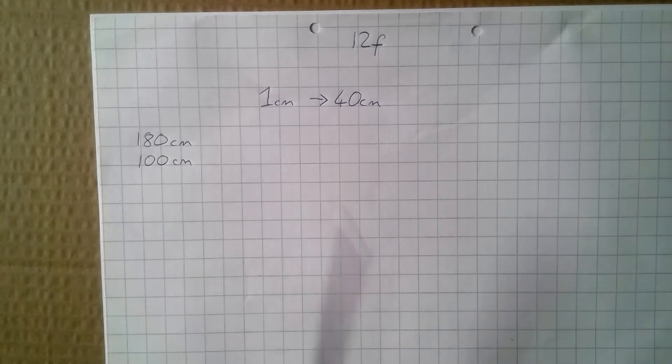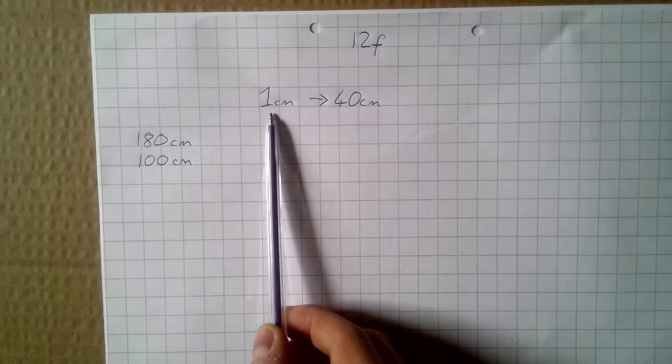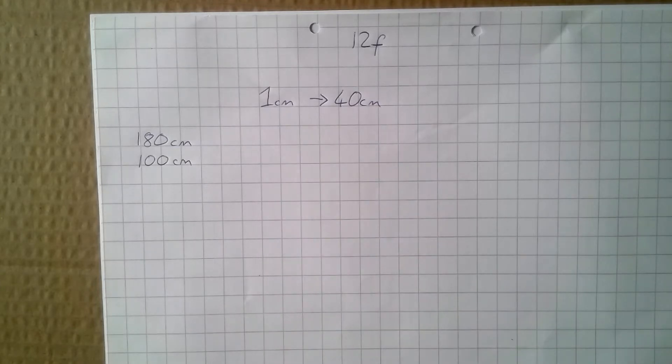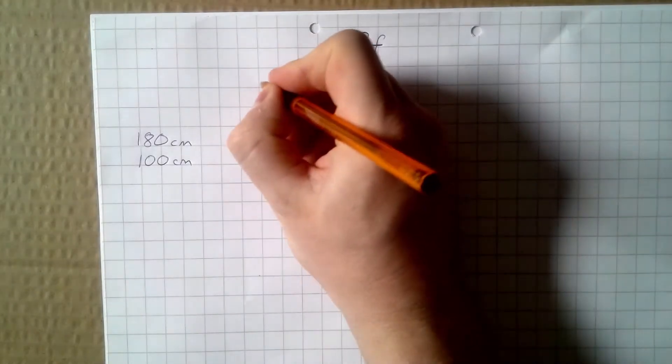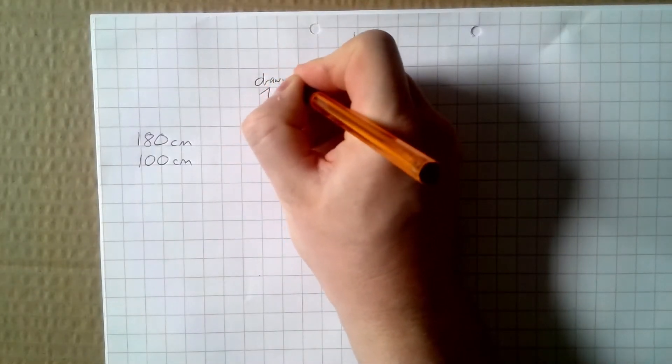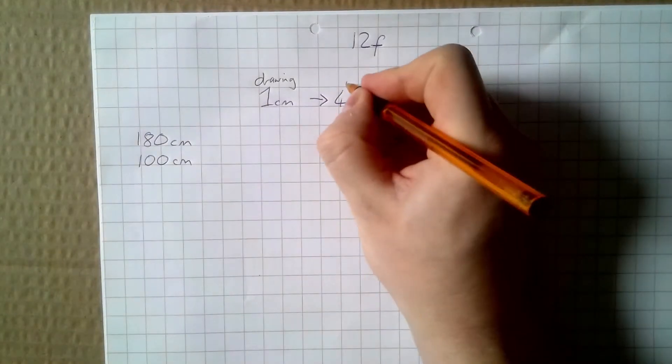Now, the example in the book says one centimeter is 40 centimeters, meaning that every one centimeter in the map or the drawing is 40 centimeters in the real world.